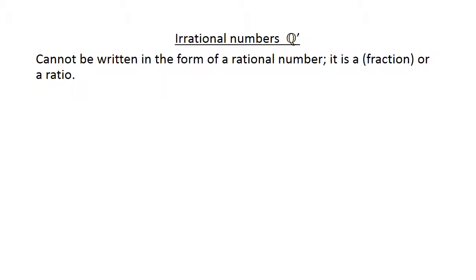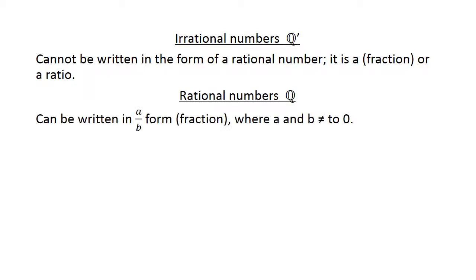Irrational numbers. Irrational numbers cannot be written in the form of a rational number. It is a fraction or a ratio. Rational numbers can be written in the form a over b. Just remember a and b cannot be equal to 0. Because we cannot divide by 0.